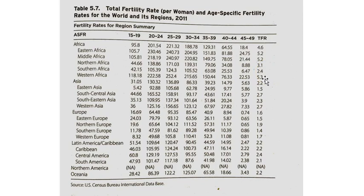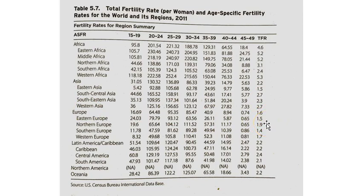Western Africa comes in similarly to eastern and middle Africa — pretty high. Within Asia, which has an overall total fertility rate of 2.2, we see it's dangerously low in eastern Asia, whereas south-central Asia and western Asia are moderate, and southeastern Asia is low. For Europe, which is at 1.6, fertility tends to be slightly higher in northern Europe, which includes the Scandinavian countries. Eastern Europe and southern Europe are also quite low, whereas western Europe is dangerously low — slightly below replacement level, which is about 2.2.